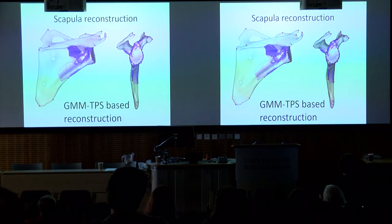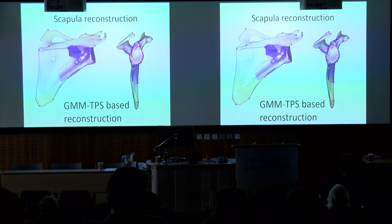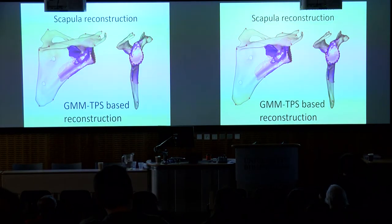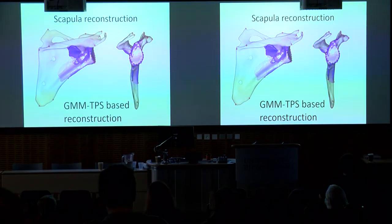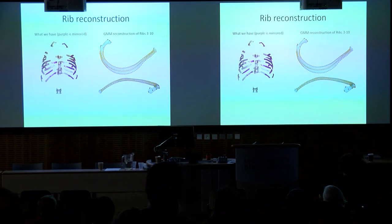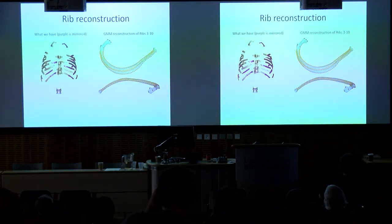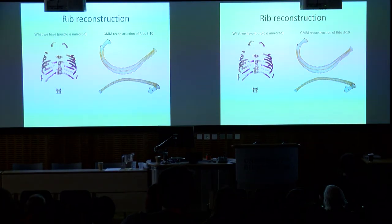For the scapula, we're now moving to geometric morphometrics. We used a thin-plate spline regression to estimate the rest of the scapula. It looks a bit rough and ready, but we 3D printed it and it articulates perfectly with the humerus, so we're quite happy with it.